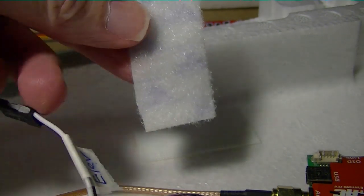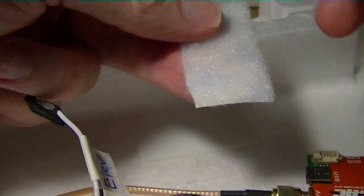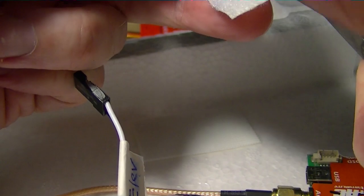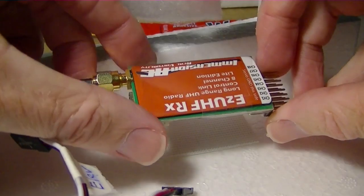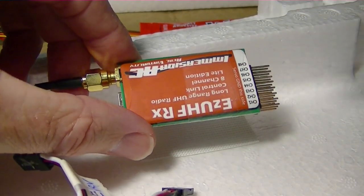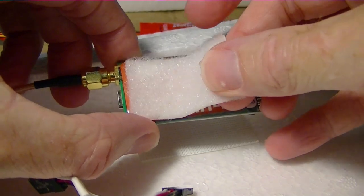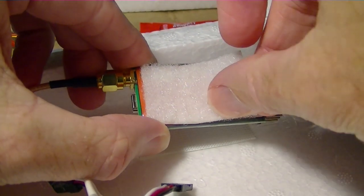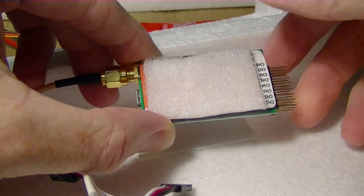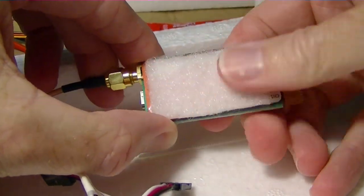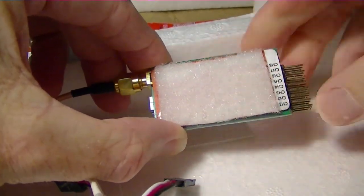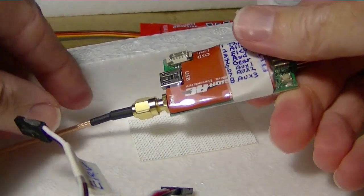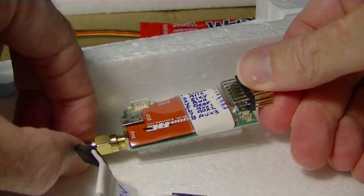I'm just going to get me some loop here and just trim it a little bit. So let's put some loop on the back of the Easy UHF receiver. And we'll go ahead and just stick that down.